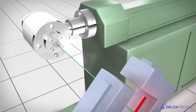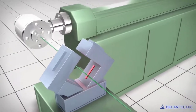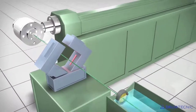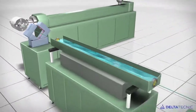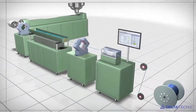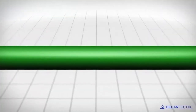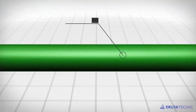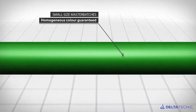This creates a homogeneous color, which is clearly visible in the produced cable. The cable coming out has a homogeneous, regular, uniform surface — a much better finish. This is a very clear quality improvement achieved thanks to the smaller-sized pellets.